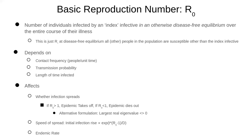By contrast, if the basic reproductive number is greater than one — let's suppose it's two — you infect two people on average before you recover. Each of them infects two more, and one becomes two, two becomes four, four becomes eight, sixteen, and so on. This can be measured empirically by looking at how quickly it spreads — it goes up exponentially based on the basic reproductive number and what's called the intergenerational time.